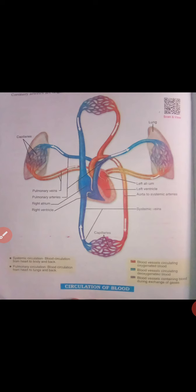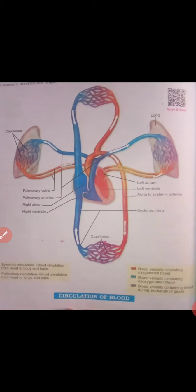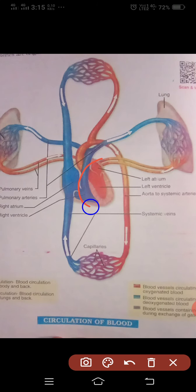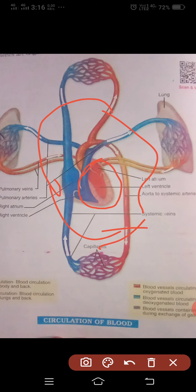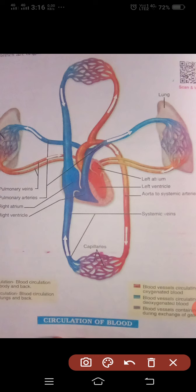Next is coronary circulation. The coronary arteries are originated from the aorta and they supply blood to the heart muscles. Through this picture, we can see the heart and the coronary arteries originating from the aorta, supplying blood to the heart muscles, through which the blood flows.